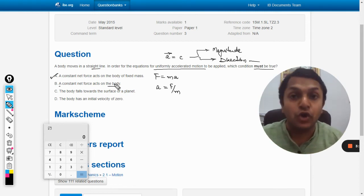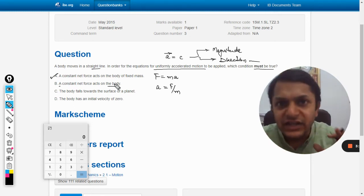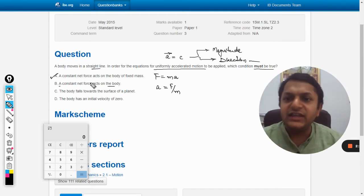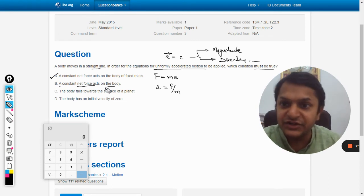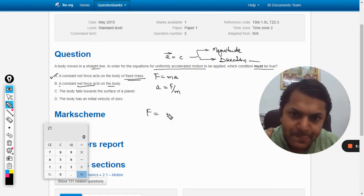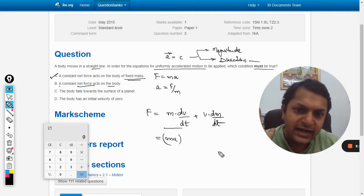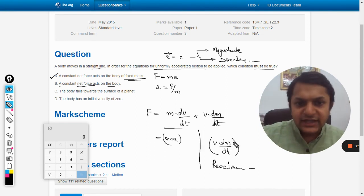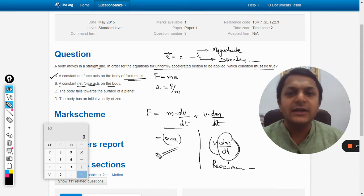Now in such a case, if we take the example of rocket motion, the mass is variable for a rocket. So F is equal to m into a is not valid when we are dealing with the rocket. Just saying that a constant force is required on a body is not a sufficient condition. The sufficient condition is it should have a fixed mass. There are two formulas for that: F equals m into dv by dt plus v into dm by dt. This is m into a and this is v dot dm by dt, which is basically the rocket principle. In this, the mass is variable. Here the mass is constant.